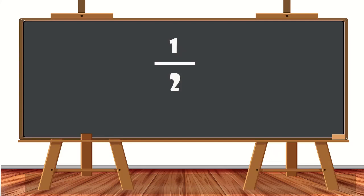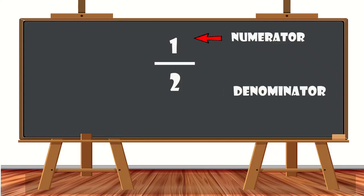The top number is called the numerator. It tells us how many pieces we take out of the whole. The bottom number is called the denominator. It tells us how many parts a whole is divided into.